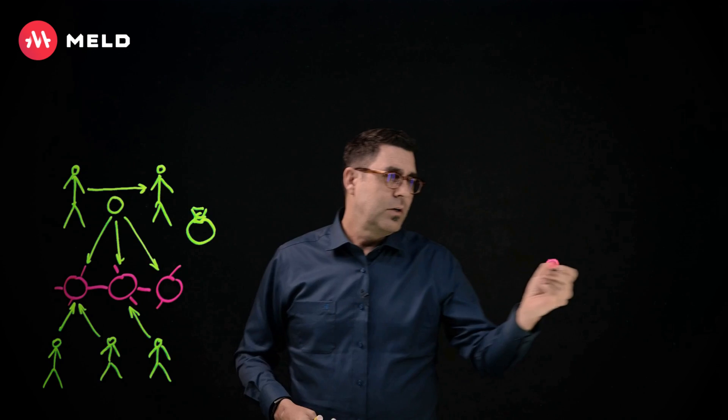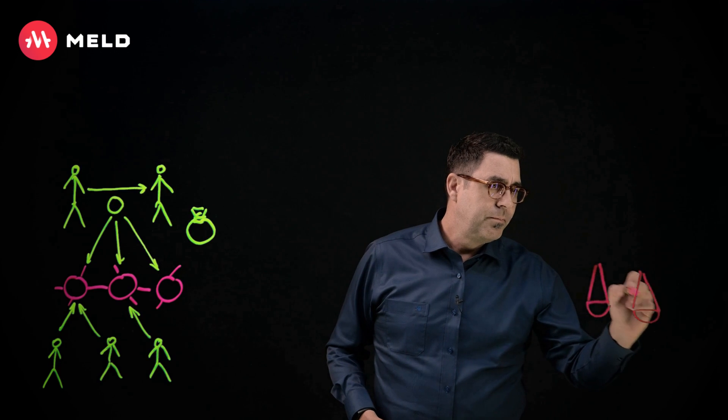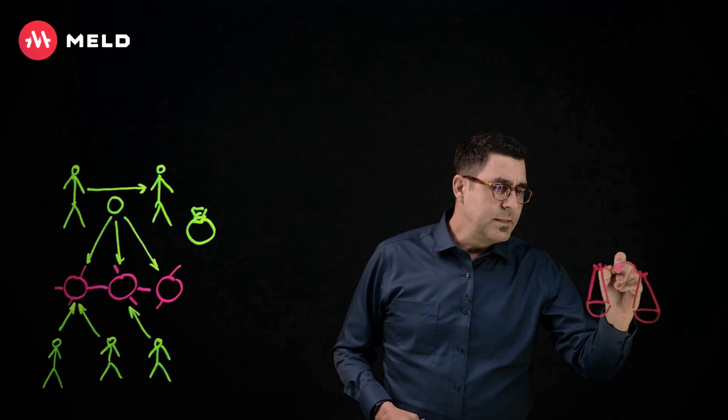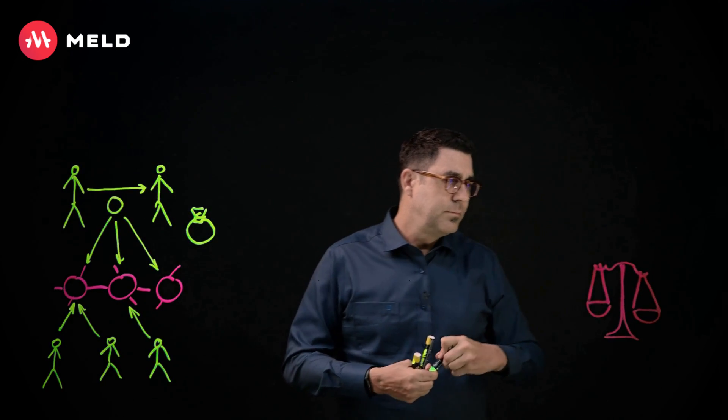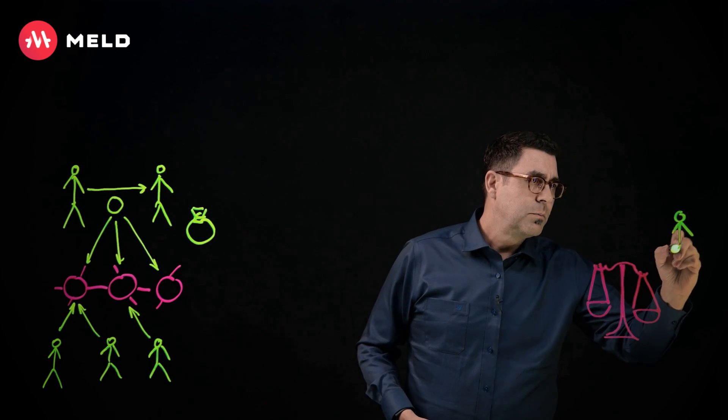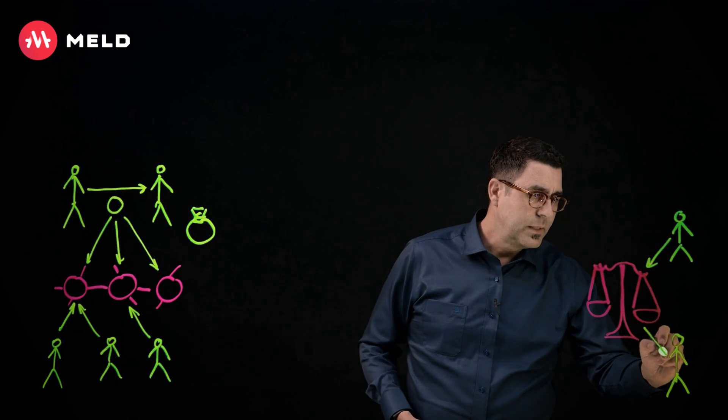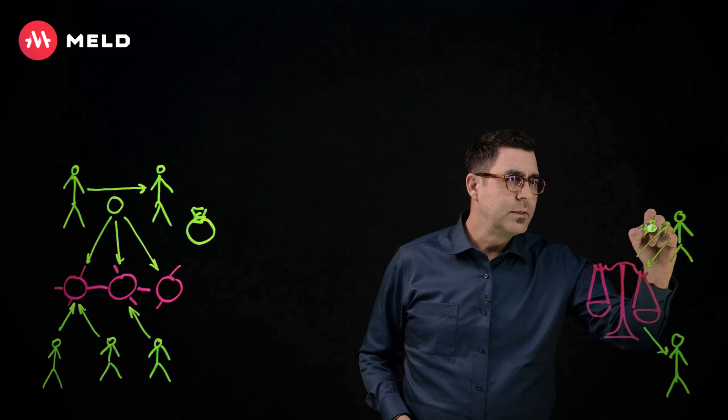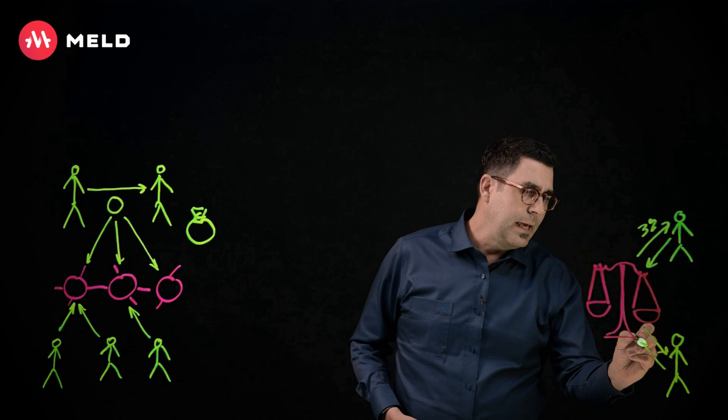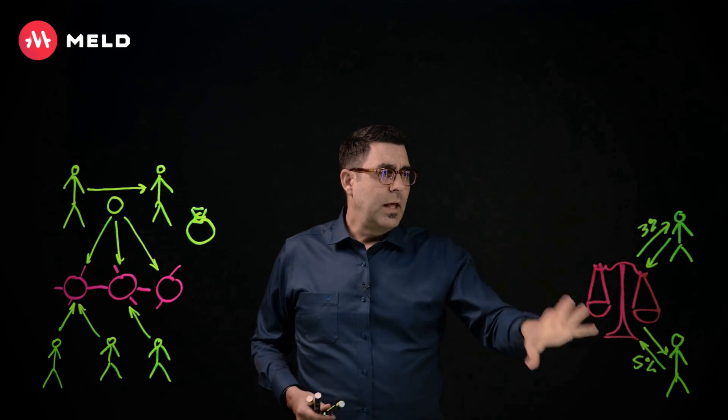So the way that MELD has solved this is on the layer one blockchain, we have a native supplying and borrowing protocol. So what this means is that users can supply tokens into the protocol. So they're able to supply a token here. And other users can borrow that token. So they can borrow it. And if you supply a token, then you will get a yield in return, let's say 3%. And if you borrow, then you have to pay interest to borrow it, let's say 5%.